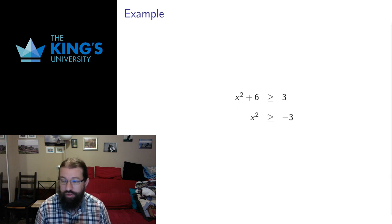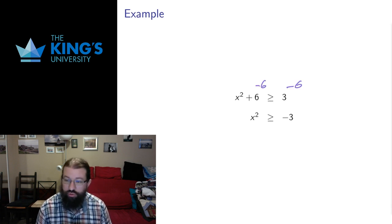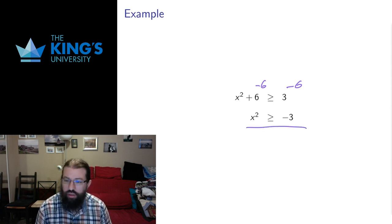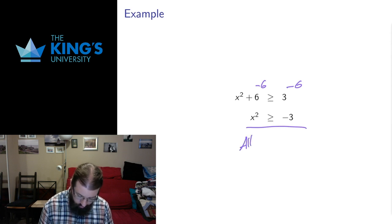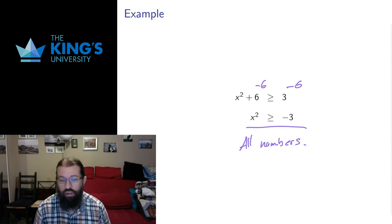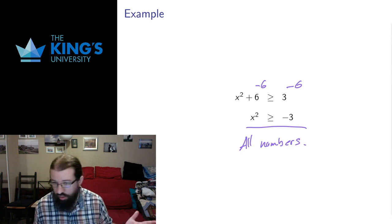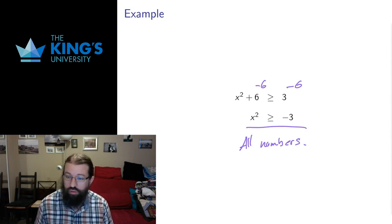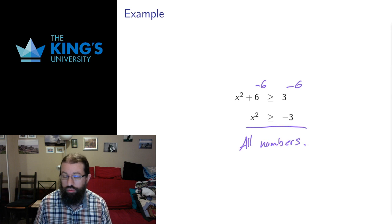A couple more examples dealing with subtleties. Here I have x squared plus 6 greater than 3. I can subtract 6 from both sides, which preserves the inequality, giving me x squared greater than negative 3. All square numbers are positive, and all positive numbers are larger than any negative number, so this is simply true for all numbers. With interpretation and familiarity, we can reach conclusions without doing all of the algebraic manipulations.